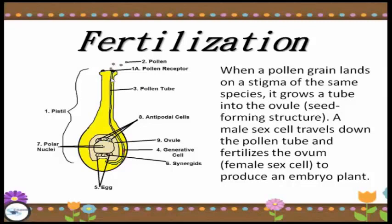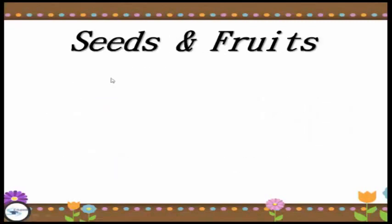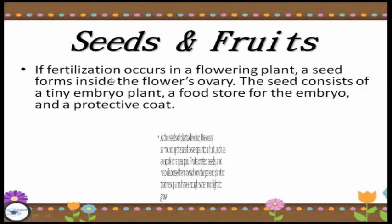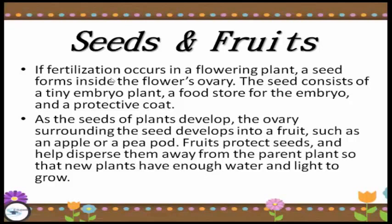When pollen reaches the pollen receptor, it travels down the pollen tube to the antipodal cell and then to the female sex cell, which is the ovum. Fertilization then takes place, producing seeds and fruits. The seeds consist of a tiny embryo plant, a food store for the embryo, and a protective coat. As the seeds of plants develop, the ovaries surrounding the seeds develop into a fruit such as an apple or a pea pod. Fruits protect seeds and help disperse them away from the parent plants so that new plants have enough water and light to grow.